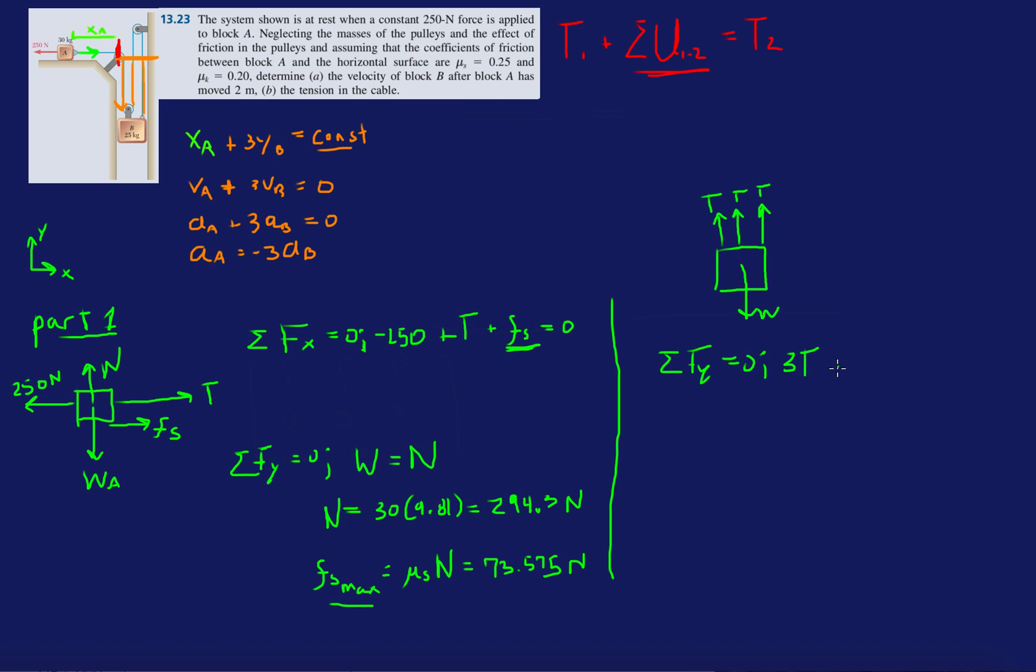I have 3T - W equals zero. This leaves me with T equals the weight of B over three. What's the weight of B? 25 times 9.81 divided by 3. Tension will be 25 times 9.81 divided by 3, which is 81.75 newtons.